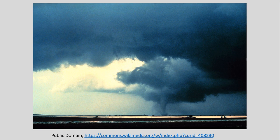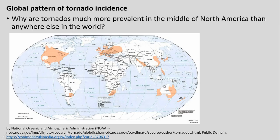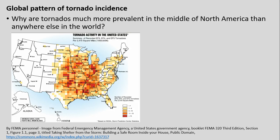Moving to tornadoes: we can look at a world map of tornadoes and where they occur. There are several zones — some in Europe, parts of Australia, southern Africa, and parts of South America. But both in extent and in number, if we look at other maps, tornadoes are much more prevalent in what we call the Great Plains of the central contiguous United States — the lower 48 states — than really anywhere else in the world. The question is: why do we see this very strong density of recorded tornadoes occurring there?